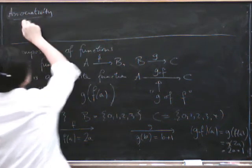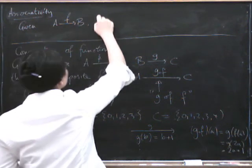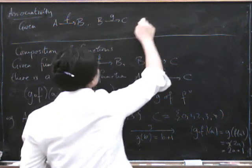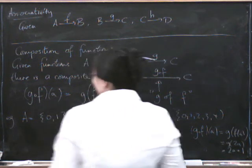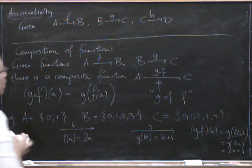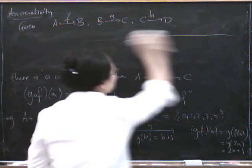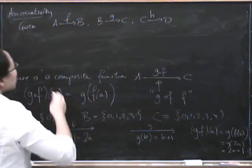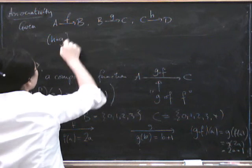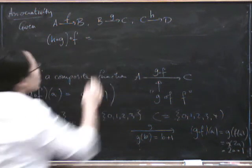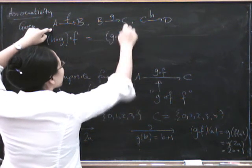Associativity says that given a function from A to B, a function from B to C, and a function from C to D, F, G, H, we could do various different things. We could, let me see how much of this I can leave up, let's try and leave this up. We could compose these two first, H compose with G and then compose the result with that one, or we could compose these two first and then compose the result with that one.